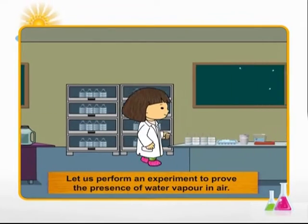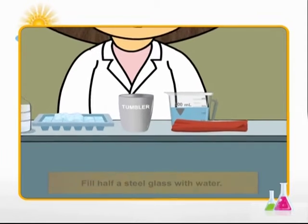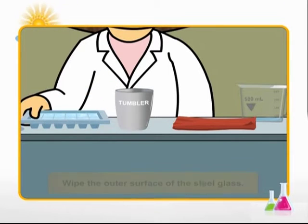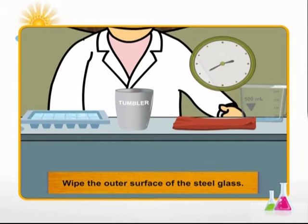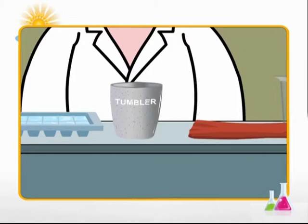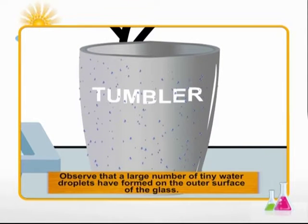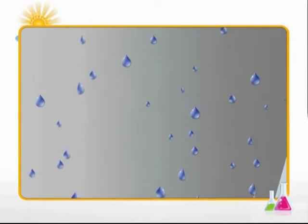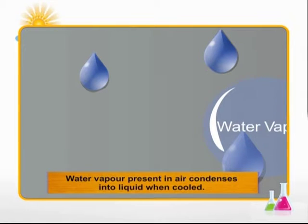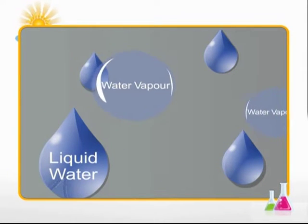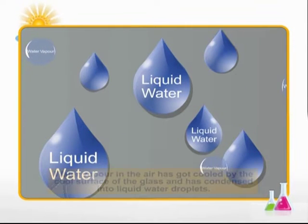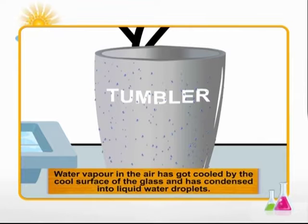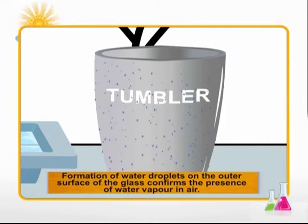Let us perform an experiment now to prove the presence of water vapor in air. Fill half a steel glass with water. Then put ice cubes in it. Wipe the outer surface of the steel glass with a clean dry cloth. What do you observe after a few minutes? A large number of tiny water droplets can be seen on the outer surface of the glass. Water vapor present in the warmer air around the glass has condensed as water drops on the cool outer surface of the glass. So, you have proved the presence of water vapor in air.